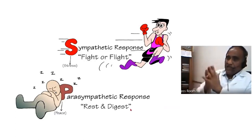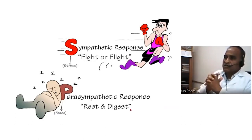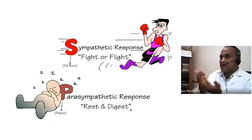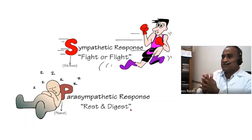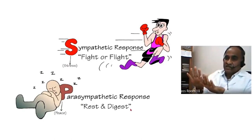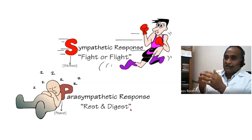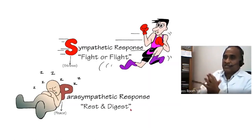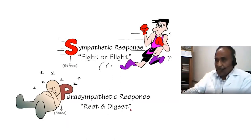Just as we have a fight and flight response, we have the opposite — that is playing dead, especially in some animals like rabbits. If a predator comes, they just lie down on the ground as if they are dead. Then once the tiger or predator passes away, they will run. That is a playing dead response.